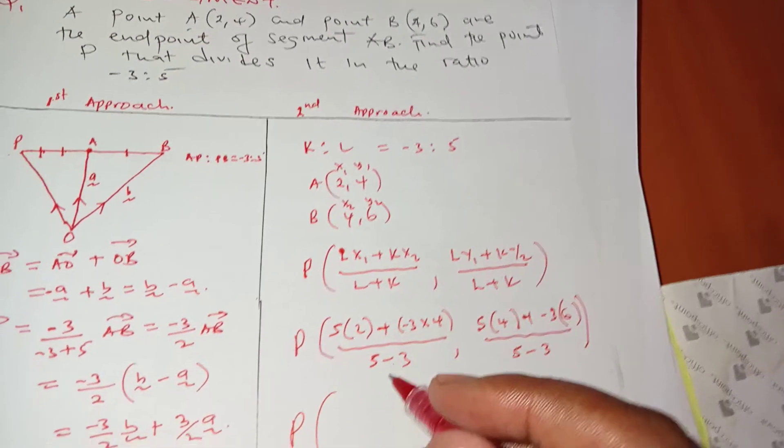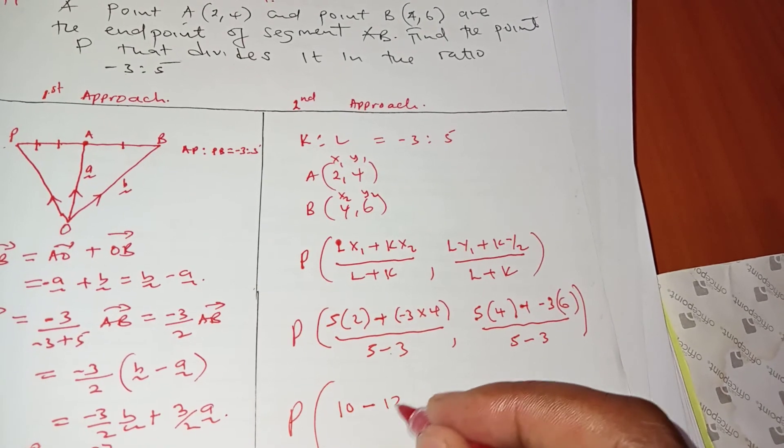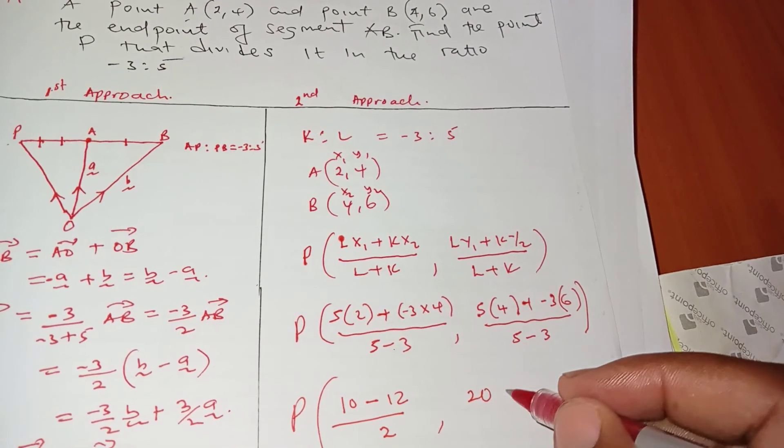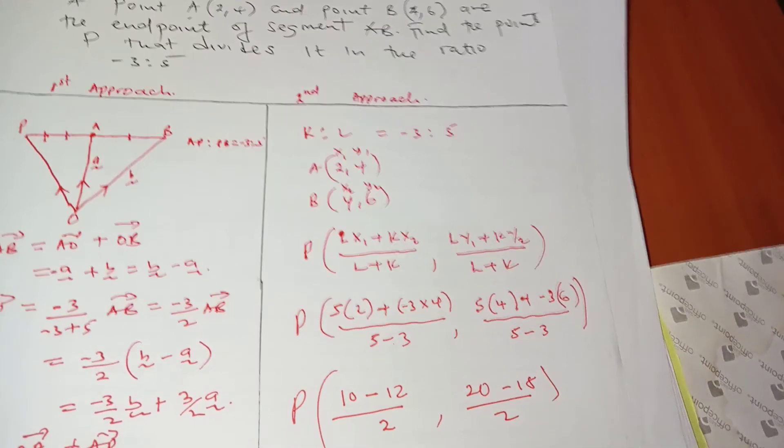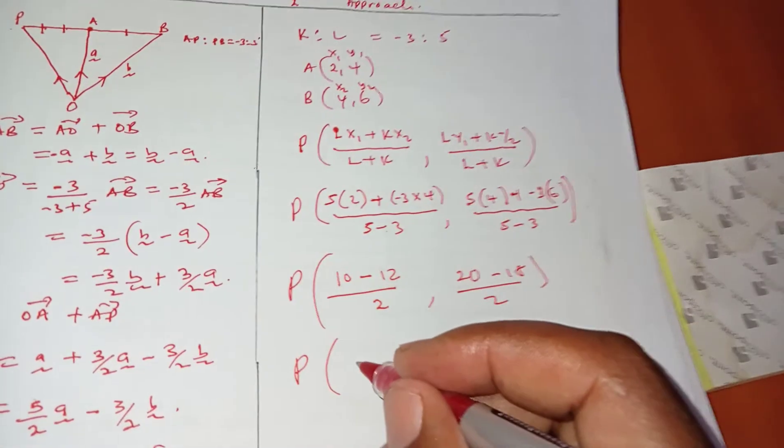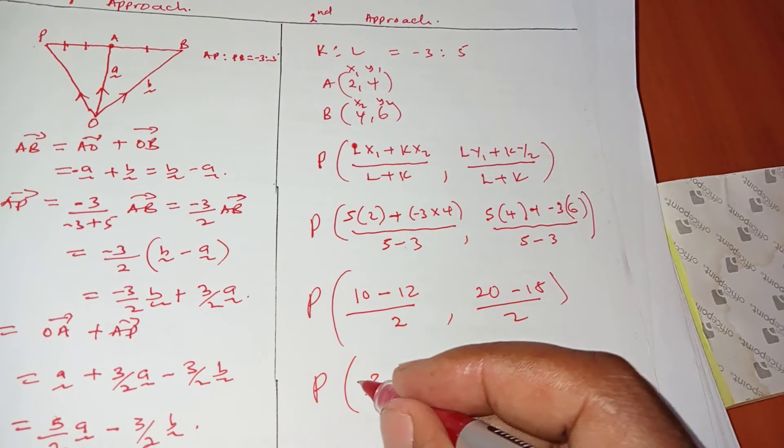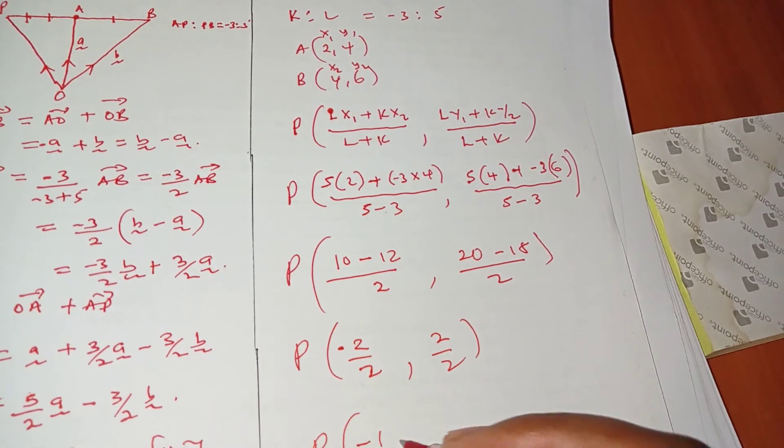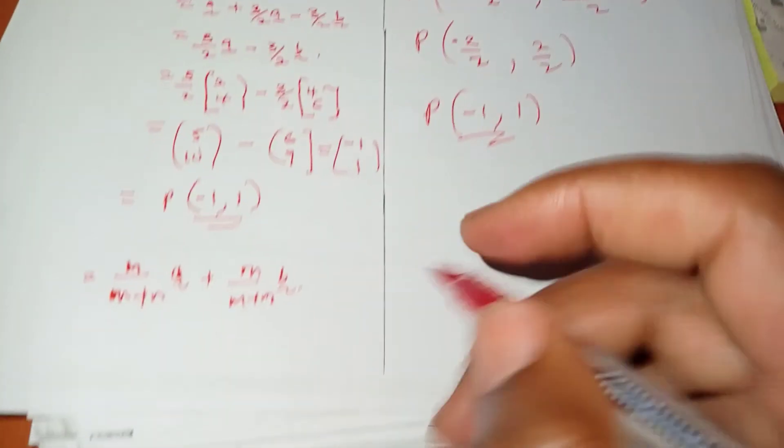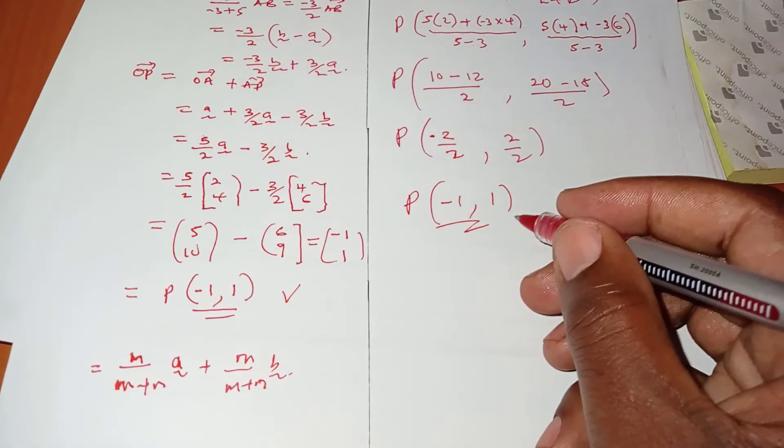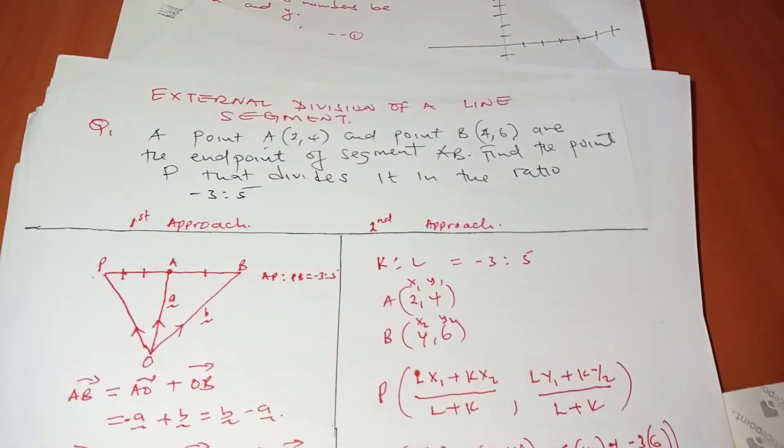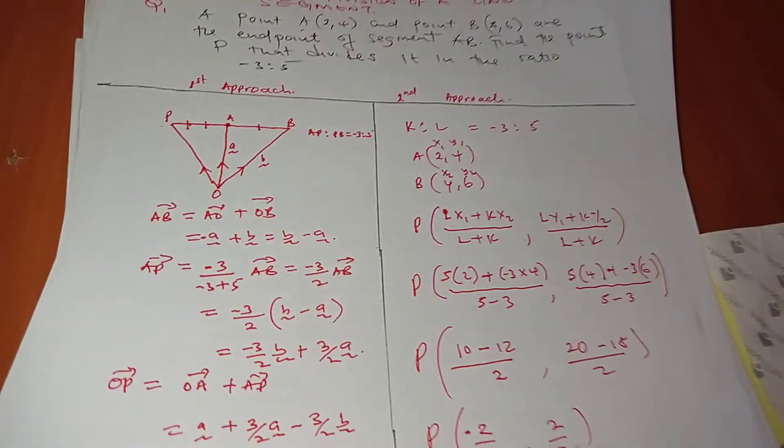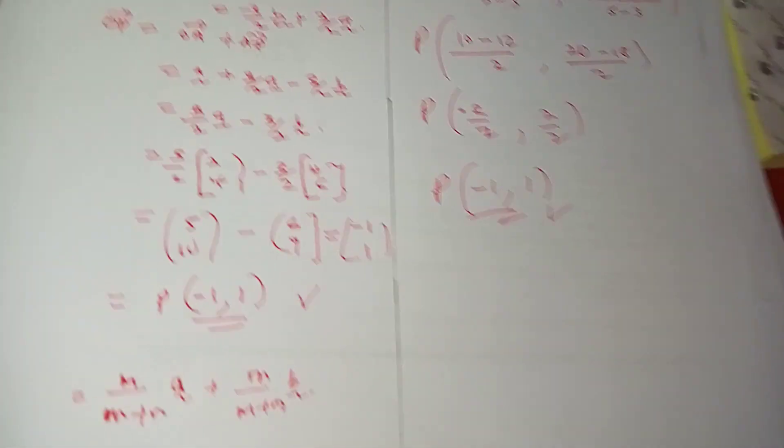My coordinate of P: this is 10 - 12 divided by 2, and this is 20 - 18 divided by 2. Simplify: P becomes -2/2 and 2/2, so P is (-1, 1). We have the same answer just like we got with the first approach. That is how you're supposed to approach this question. It's not difficult, it only depends on whether you know how to go about it. Thank you.